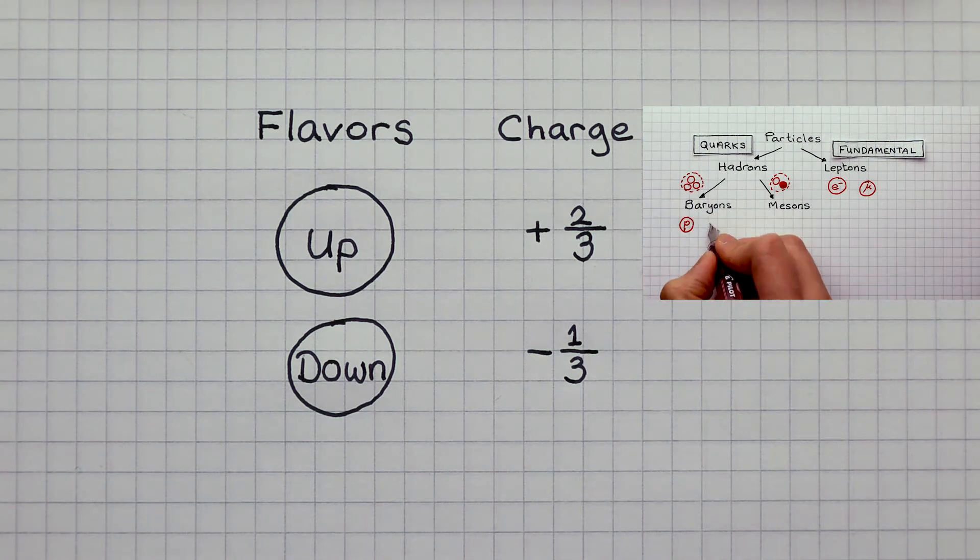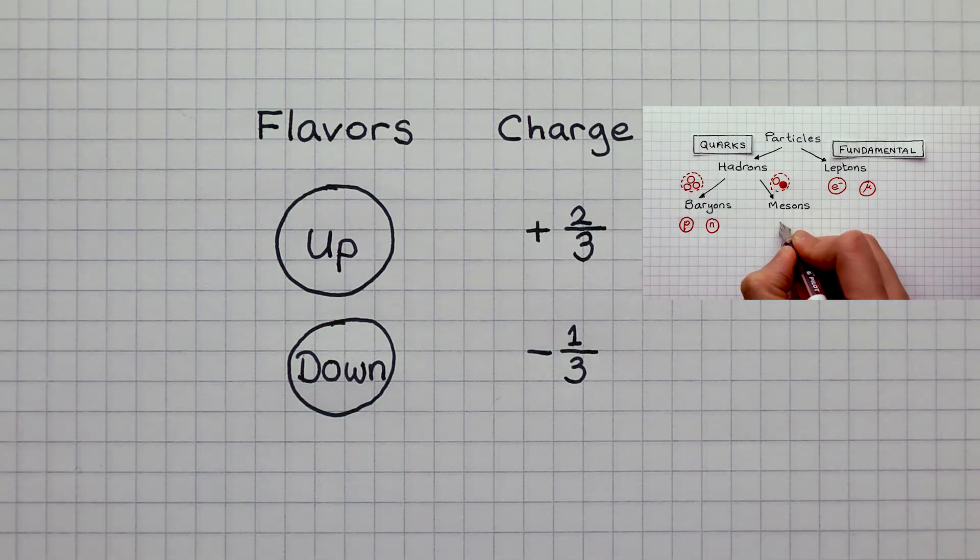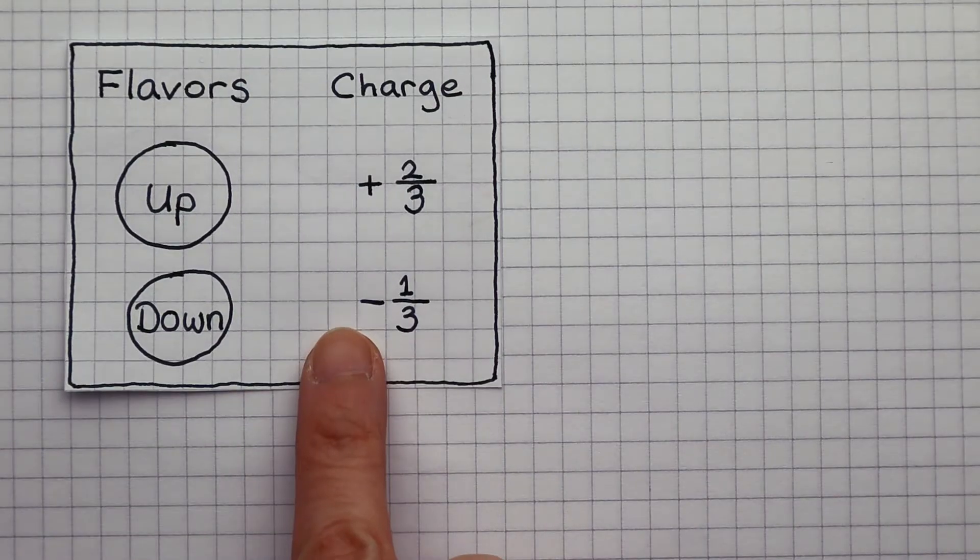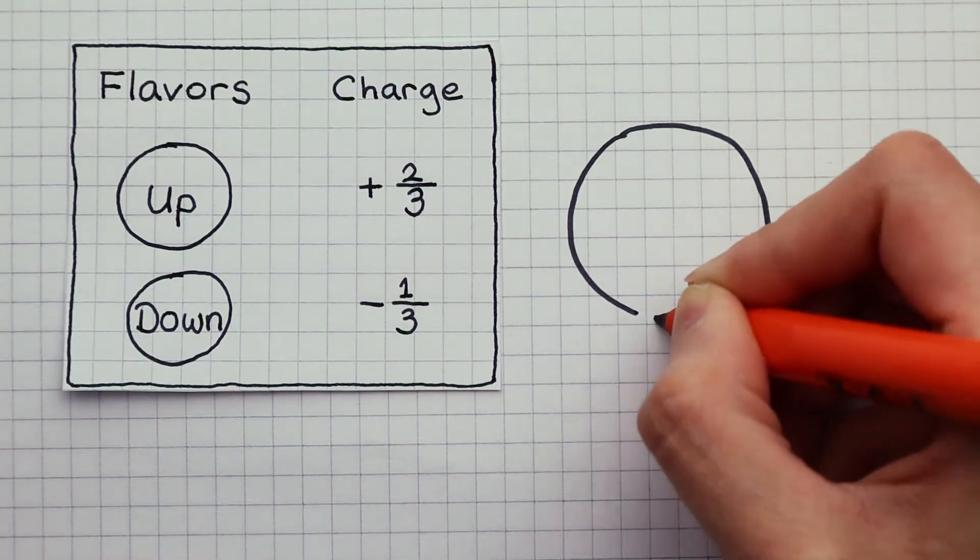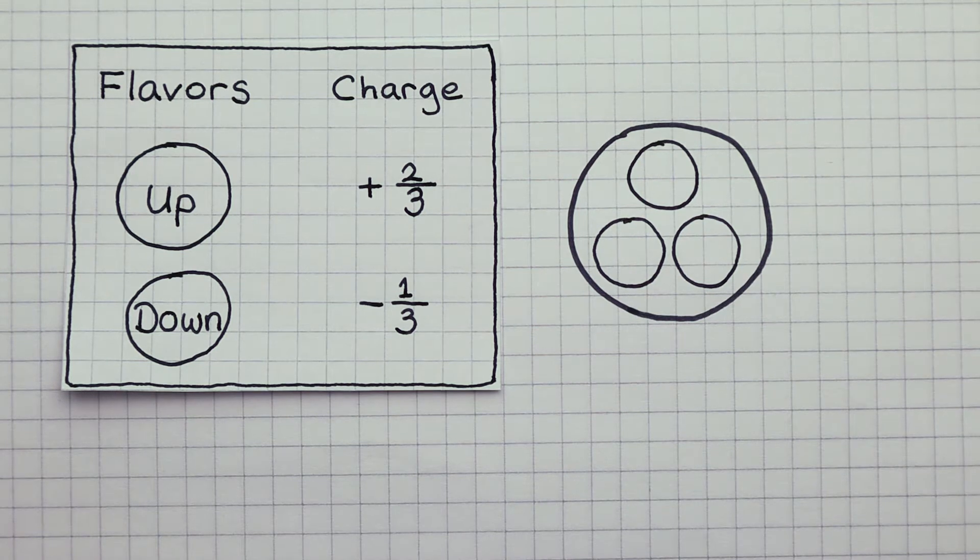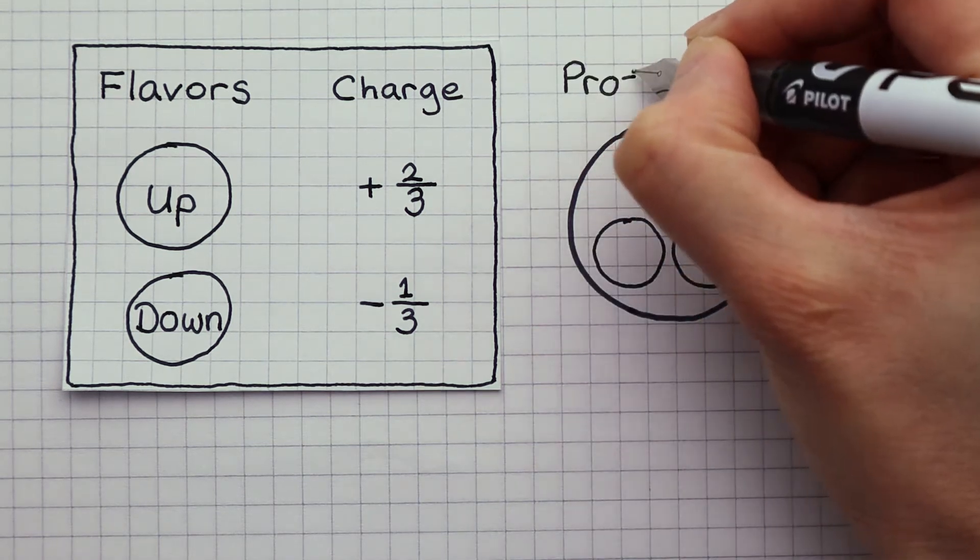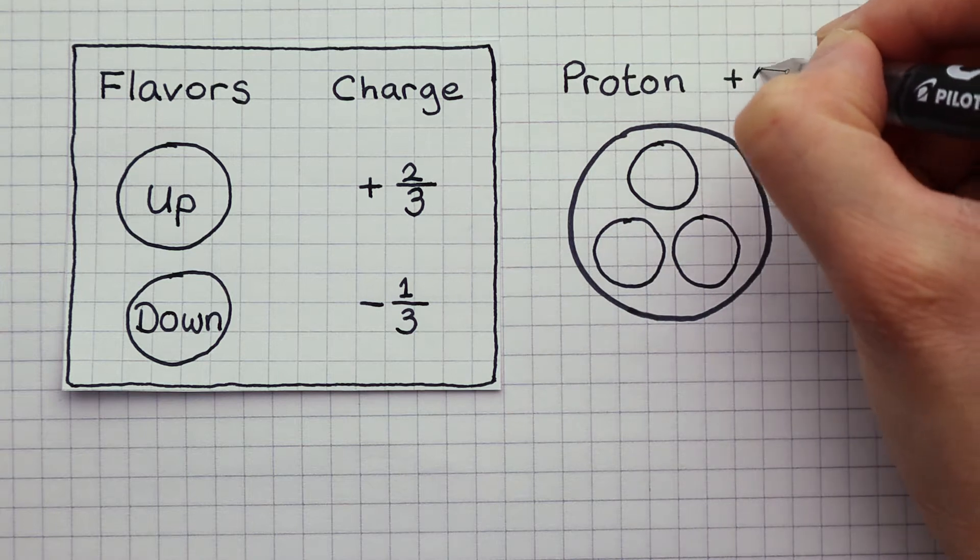In my previous video, we looked at the classification of particles and established that a proton is in the category baryons. This means that a proton is made of three quarks. So what flavors are these three quarks? We know that a proton has a charge of plus one.